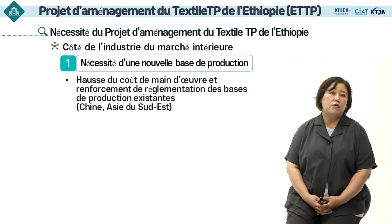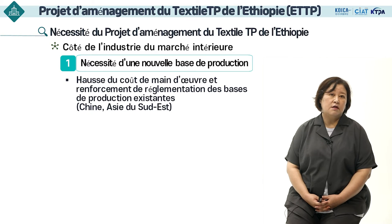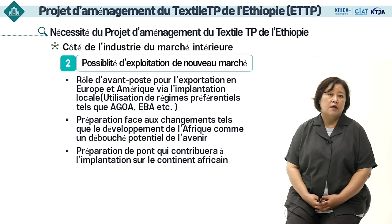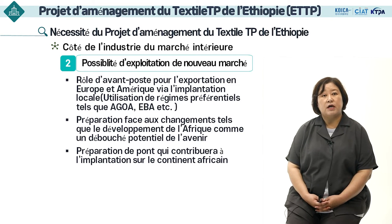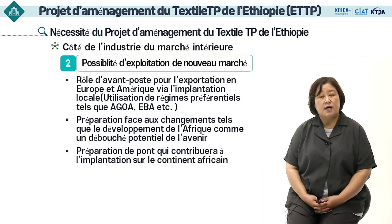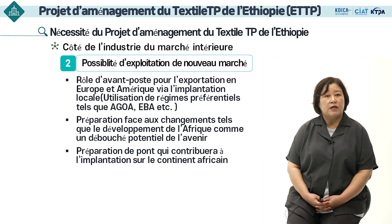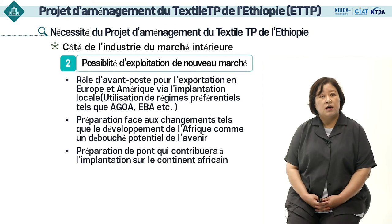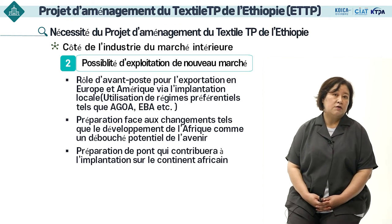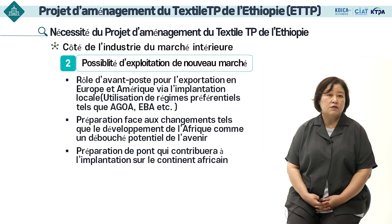C'est pourquoi les entreprises textiles coréennes qui se sont implantées en Asie tentent d'établir de nouvelles bases de production. Il y a également un fort potentiel de développement de marché. Dans le cas de l'Éthiopie, si le produit final est exporté vers l'Amérique du Nord ou l'Europe via l'Éthiopie, celui-ci bénéficiera d'un système commercial préférentiel tel que l'AGOA ou l'EDA. Puisqu'il est possible de bénéficier des avantages de ces tarifs et du système de quotas, la compétitivité des entreprises textiles coréennes augmentera.